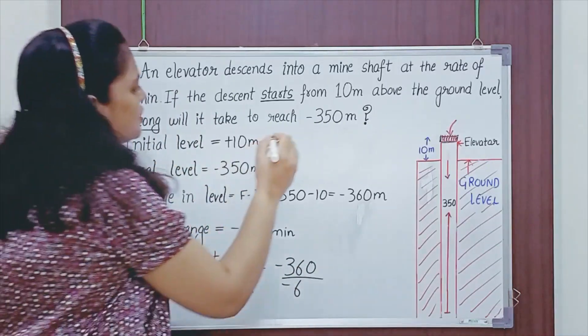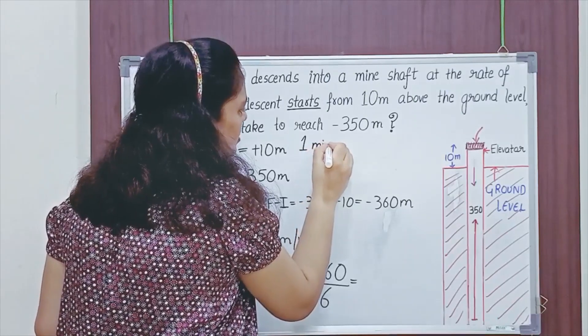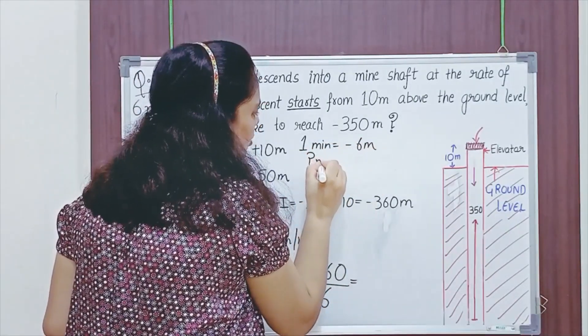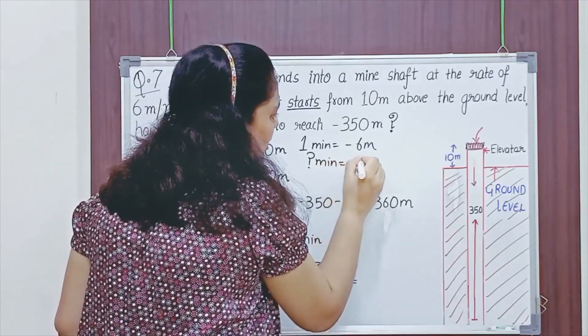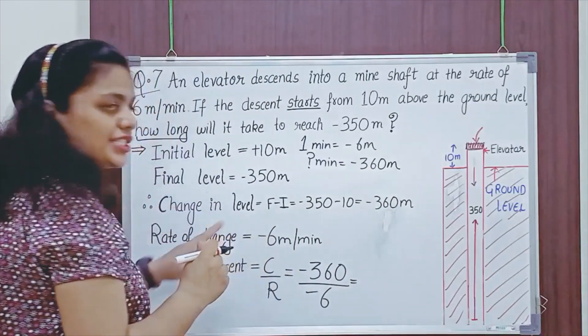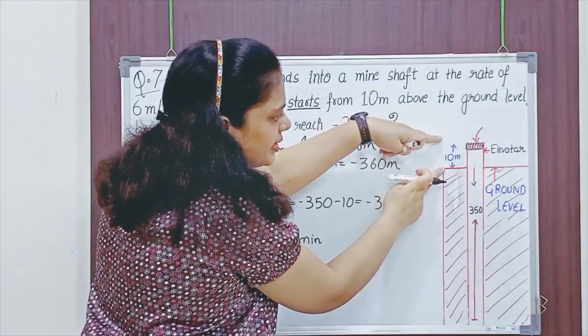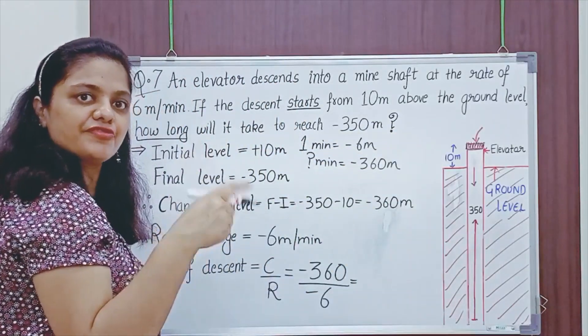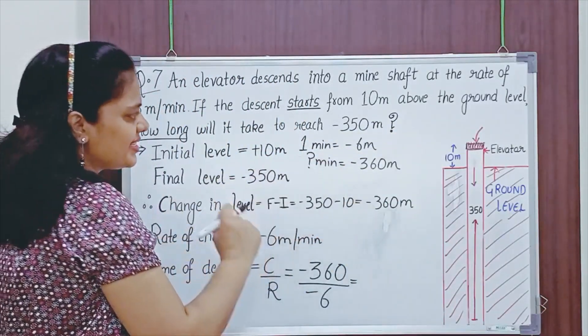One minute per rate given is minus 6 meters. So we need to find time of descent. How many minutes will it take for minus 360 meters? Why am I taking minus 360 meters? Because change is this much. Initially elevator was 10 meters above, it has to reach there. So total would be minus 350 minus 10.